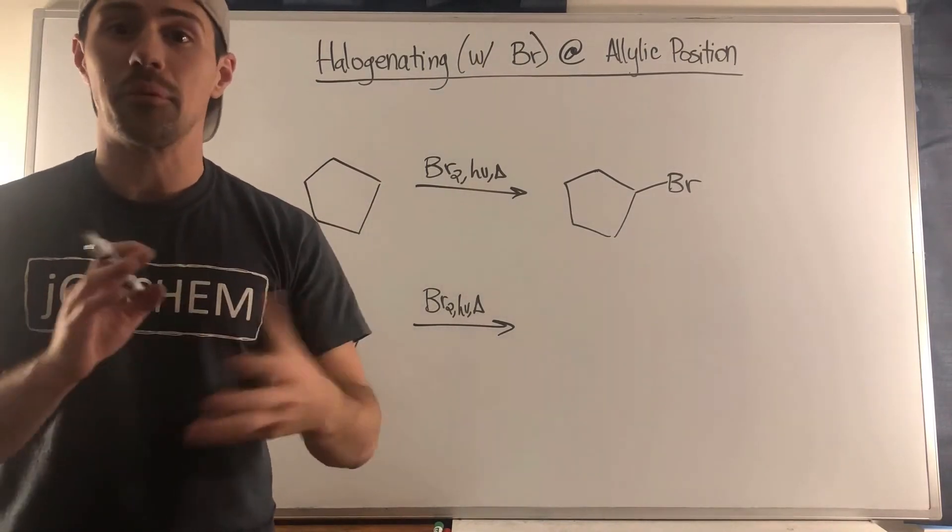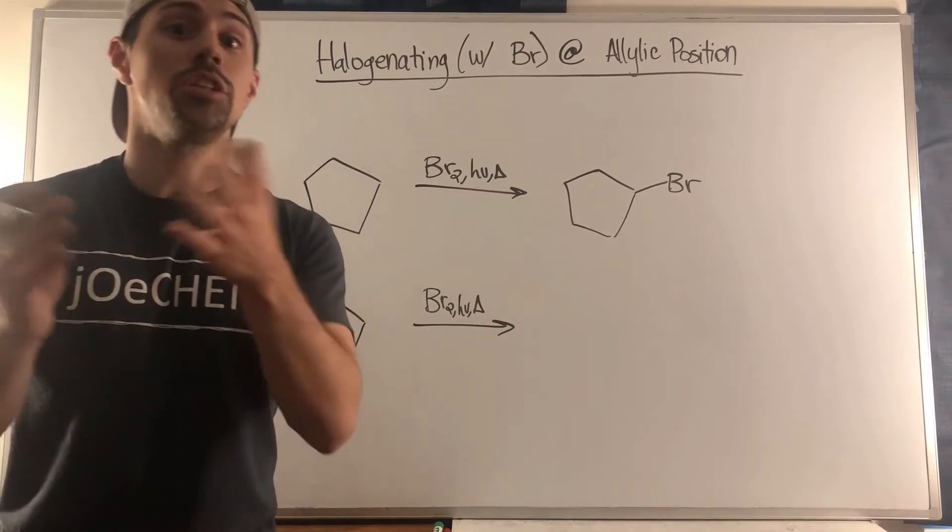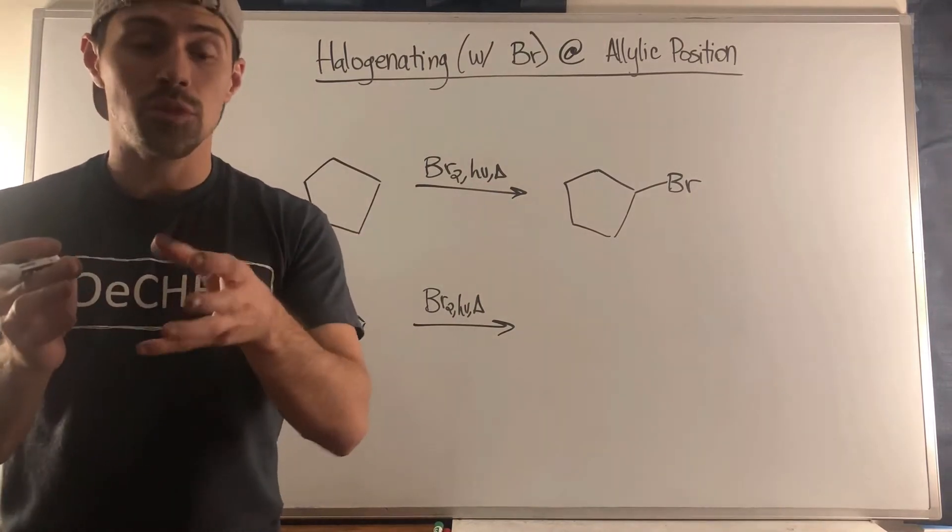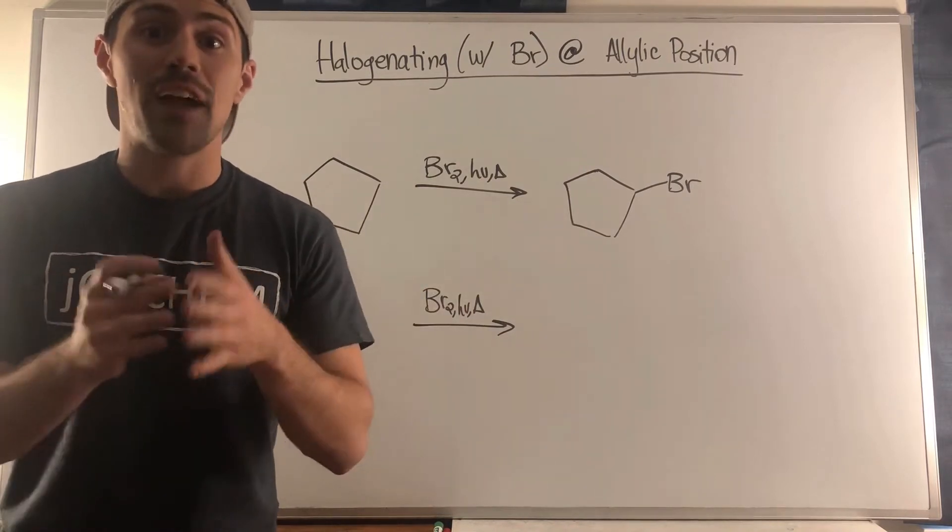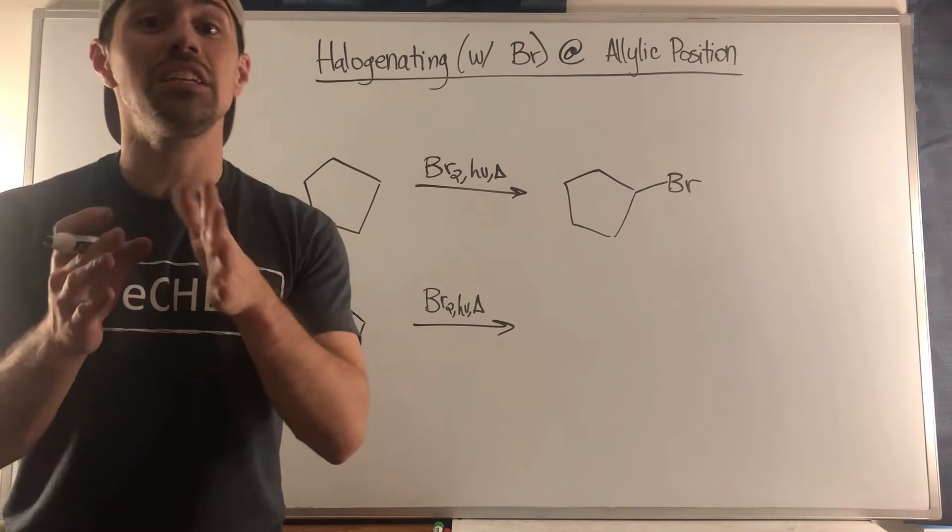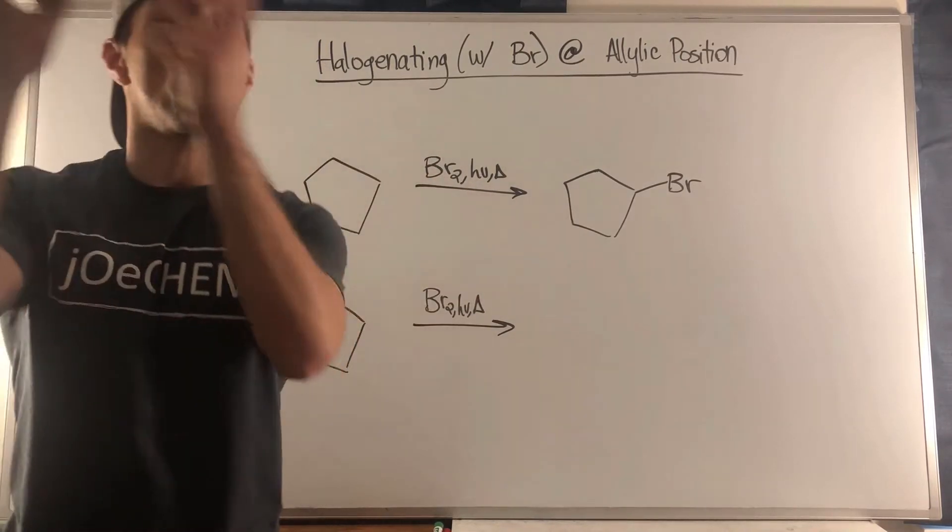When you're talking about conjugated systems, sometimes it will be advantageous or you need to complete a reaction where you'll be sticking a halogen on the allylic position in certain scenarios. We'll only be able to do this with bromine, but we need to use a different reaction than the free radical chain reaction that we learned at the beginning of OCHEM1.